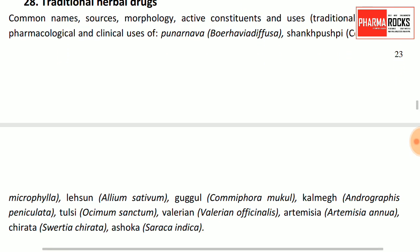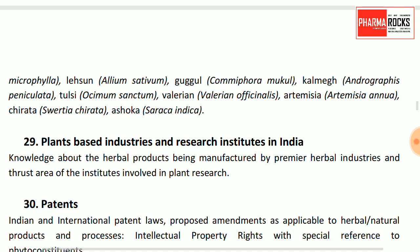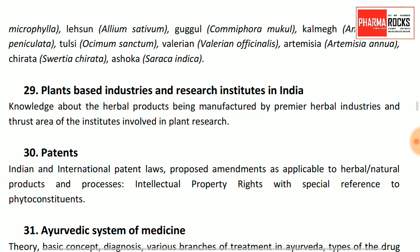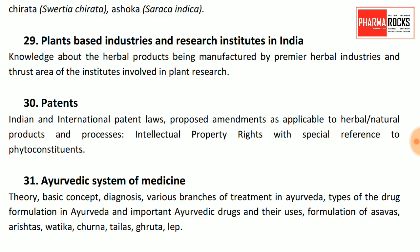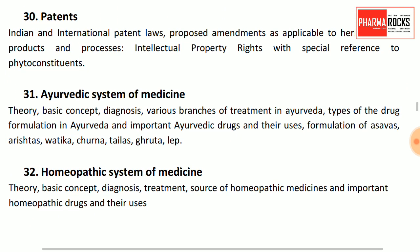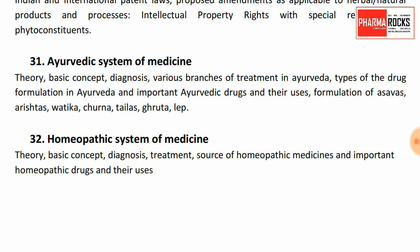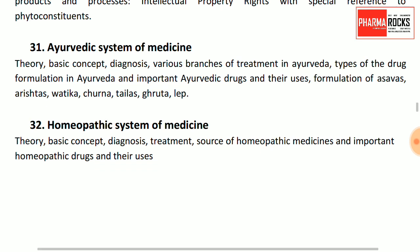Extracts and tincture techniques, phytopharmaceuticals, quality control and standardization of herbal drugs, herbal formulations, worldwide trade of crude drugs and volatile oils, and herbal cosmetics are very important for GPAT. Traditional herbal drugs, plant-based industrial and research institutes in India, knowledge about herbal products manufactured by premium herbal industries, and Ayurvedic preparations like kwath, vatika, churna, aristas, and ghrita.